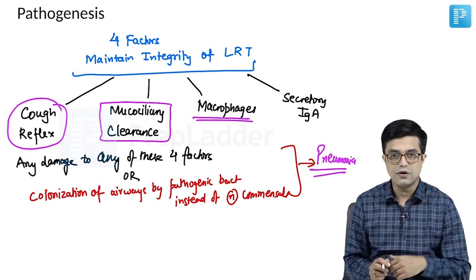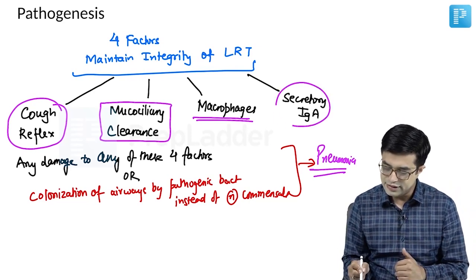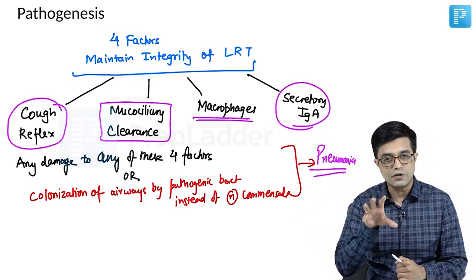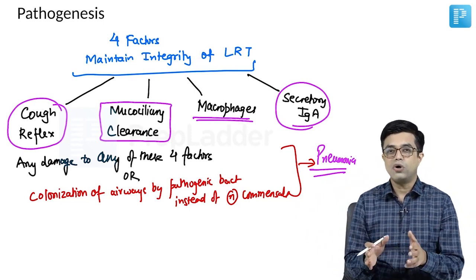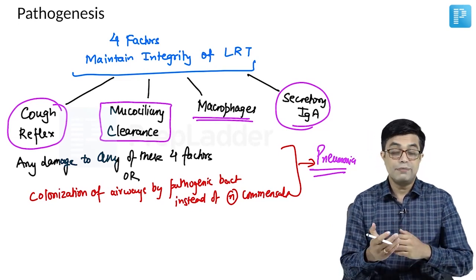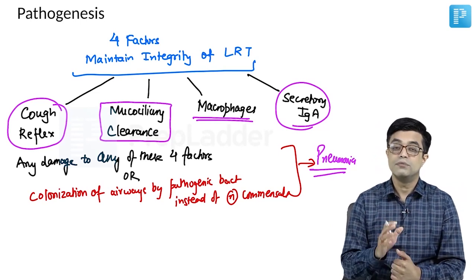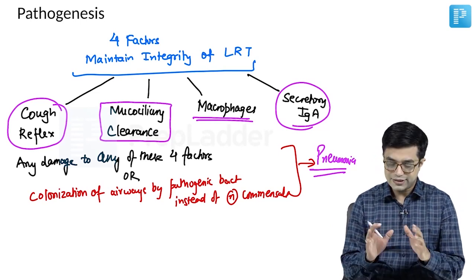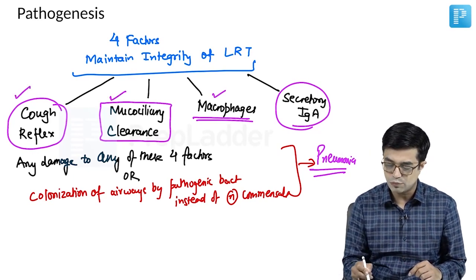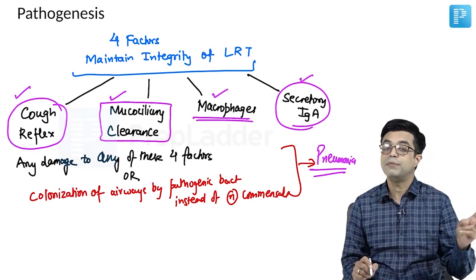Macrophage function getting affected — all those immunodeficiencies will cause pneumonia. Secretory IgA not being present — those are humoral immunodeficiencies and will again cause pneumonia in the child. Any factor which promotes pathogenic bacterial colonization, including recurrent viral infections, can create conditions for recurrent pneumonias. These four factors are given a lot of prominence in Nelson, not only in the chapter on pneumonia but in two other chapters as well, so this can be asked in your entrance exam.